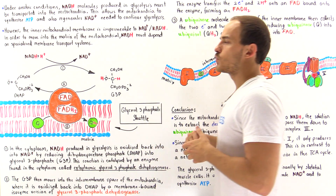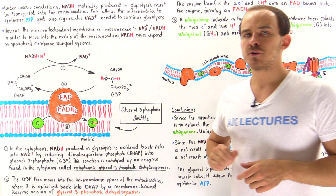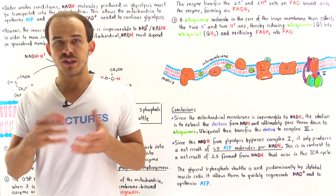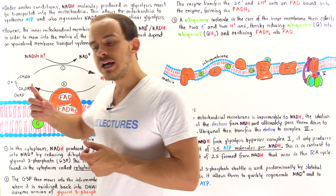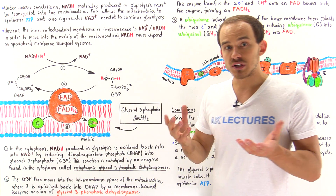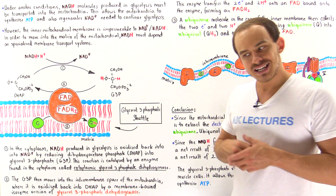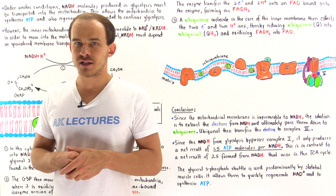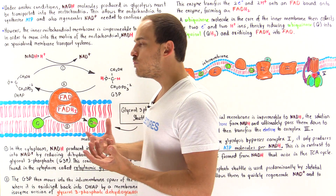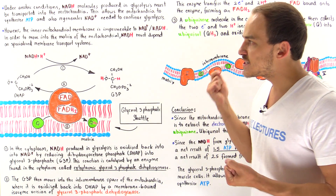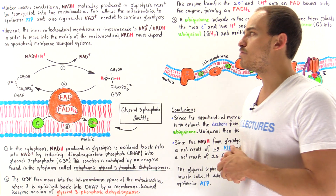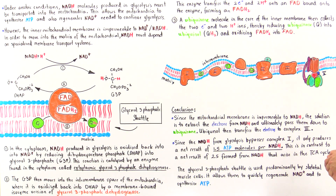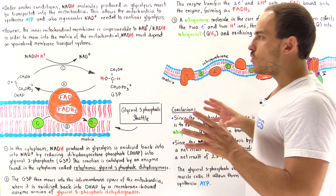The inner mitochondrial membrane is actually impermeable to NAD+ or NADH molecules. That means these NADH molecules, once formed in glycolysis, cannot simply move across the membranes of the mitochondria. Their movement depends on a specialized membrane transport system called the glycerol 3-phosphate shuttle.